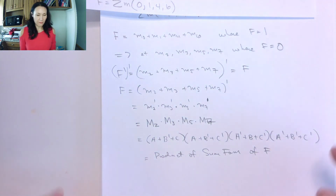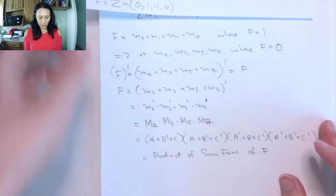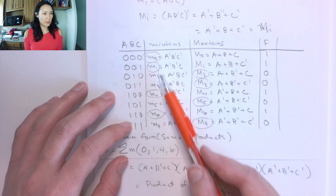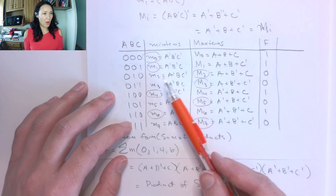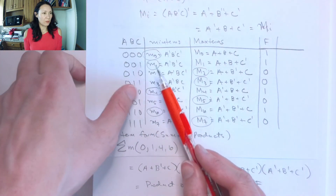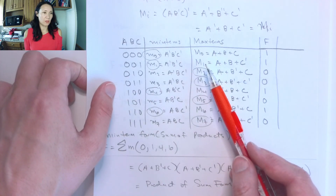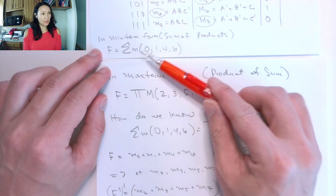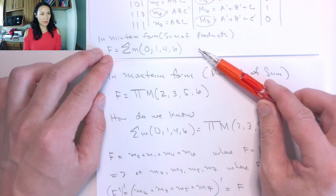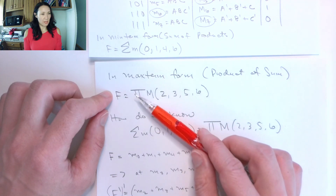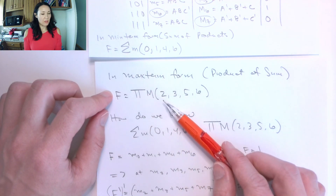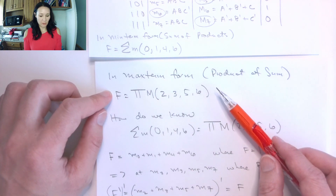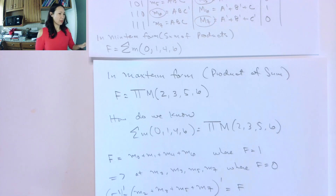The easiest way to convert between forms: if given the min term expansion, your max term expansion uses all the other term indices. If min terms are 0 and 1, then max terms are 2, 3, and so on. The min term notation is sigma with lowercase m and the list where f equals 1. The max term notation is pi with capital M and the list where f equals 0, since they are complements of each other.